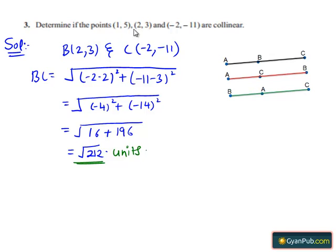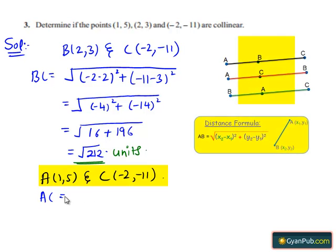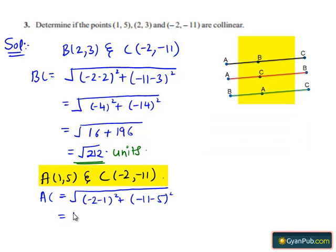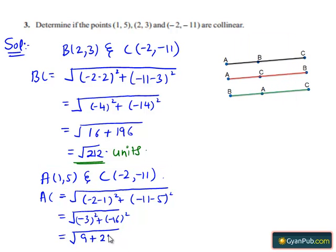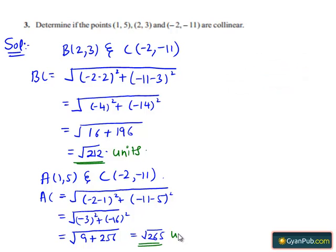Let us consider the third pair of points A(1,5) and C(-2,-11). The distance AC, given by the distance formula, is √[(−2−1)² + (−11−5)²] = √[(−3)² + (−16)²] = √[9 + 256] = √265. Hence, the distance AC = √265 units.